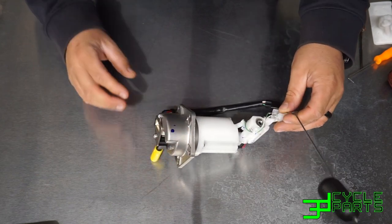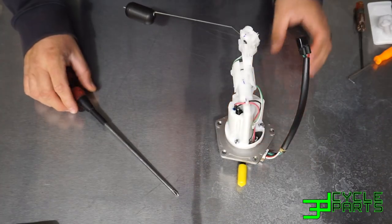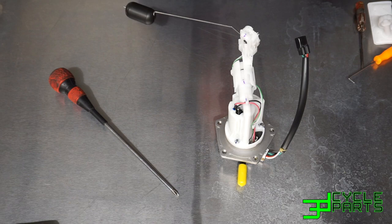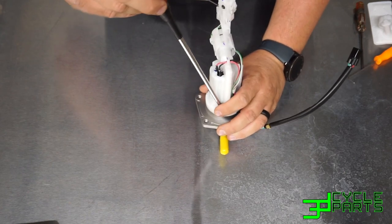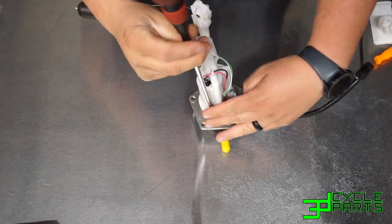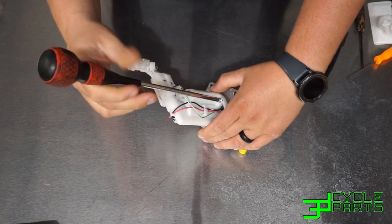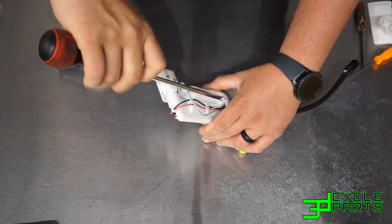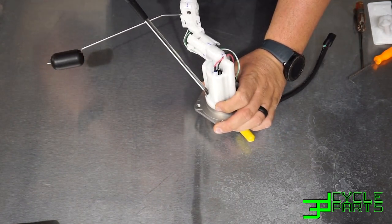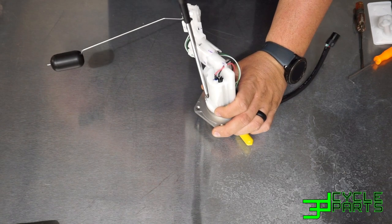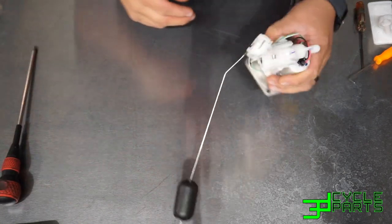Now once you get to this point we're going to start with a number two Phillips or a JIS. So you've got these three screws around the base. Start by removing those three screws and don't lose them.